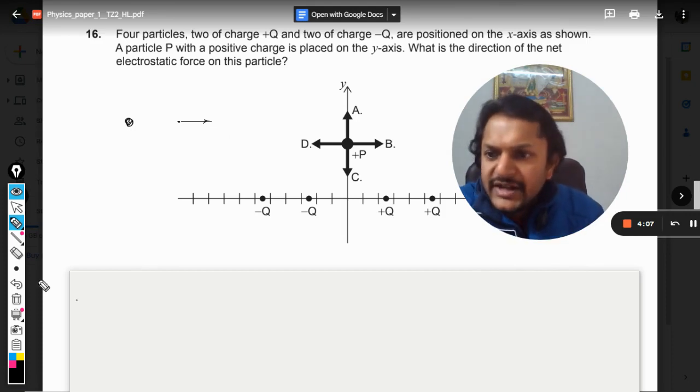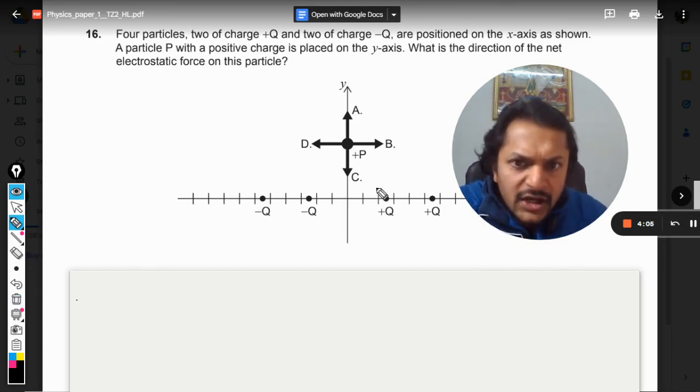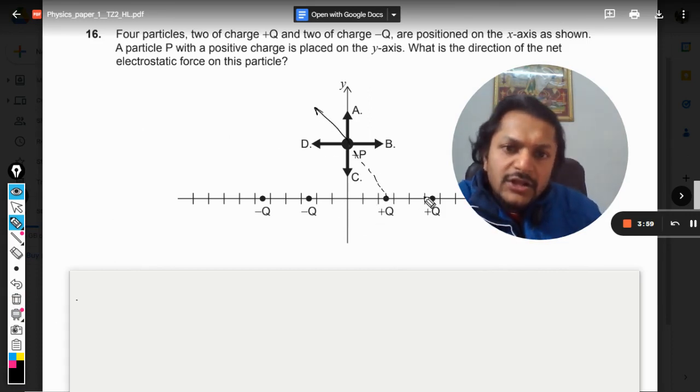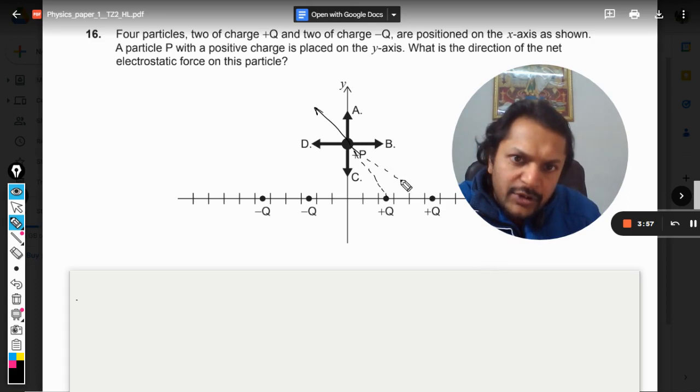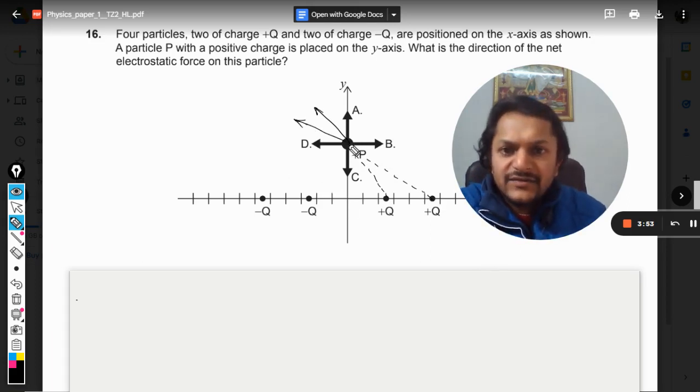Anyways, let me do it like this. So this is the positive charge and this positive charge is going to repel it. So this is again a positive charge, so this positive charge is also going to repel it. And this negative charge is going to attract it, and this charge is also going to attract.